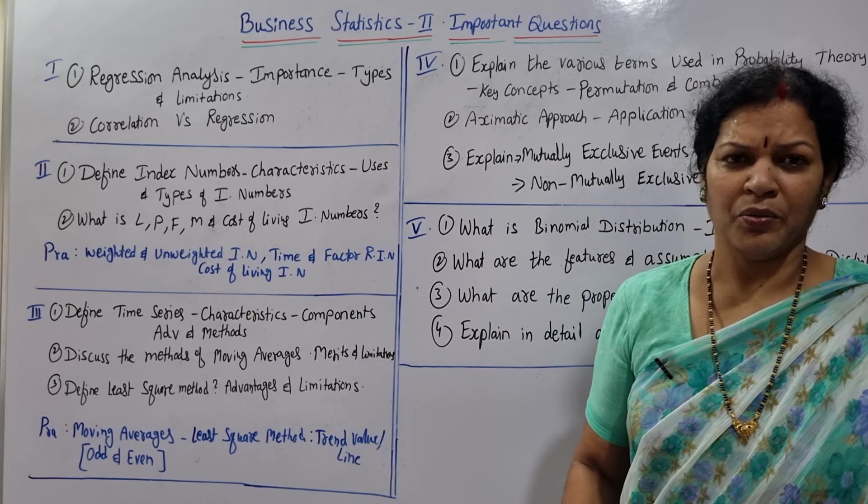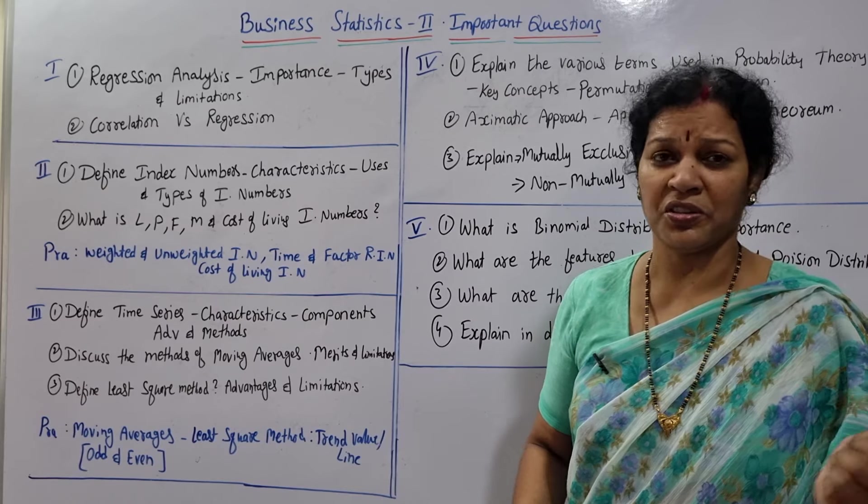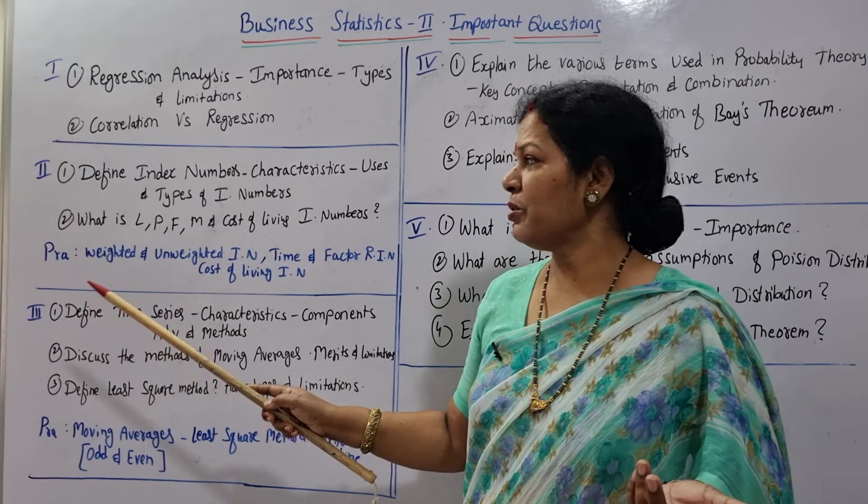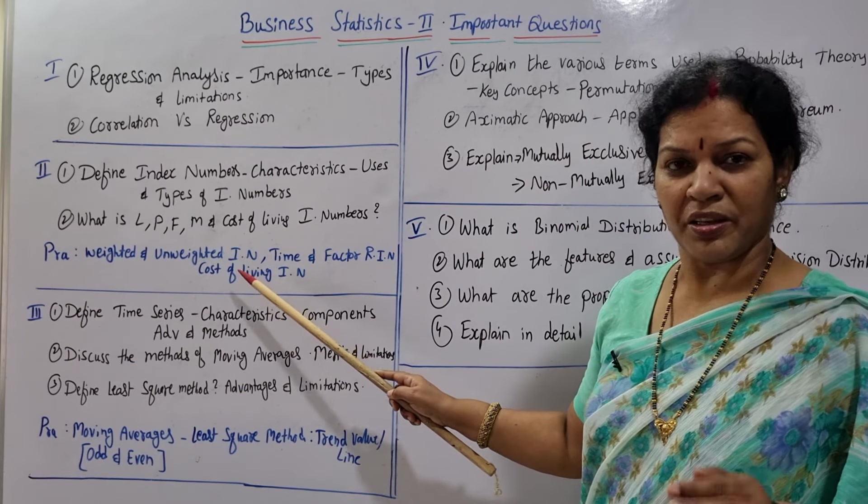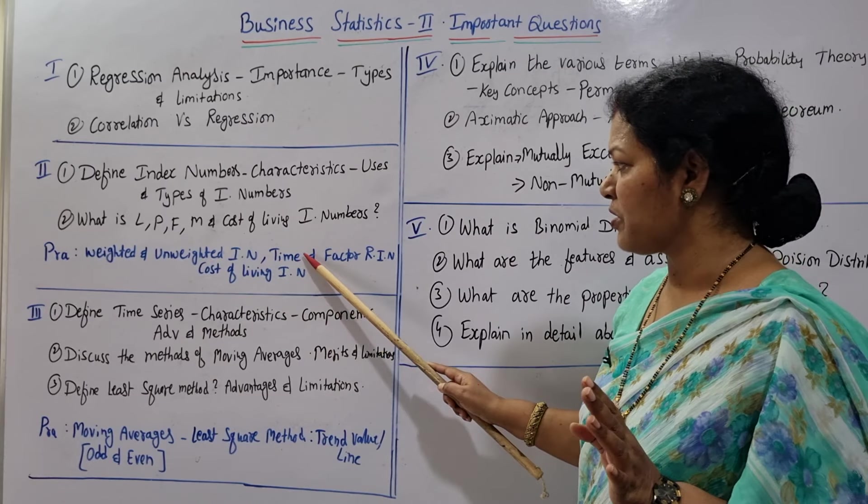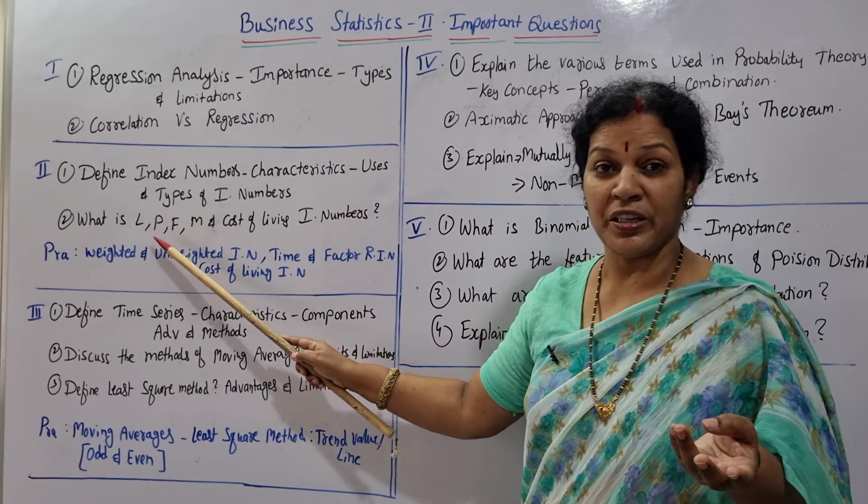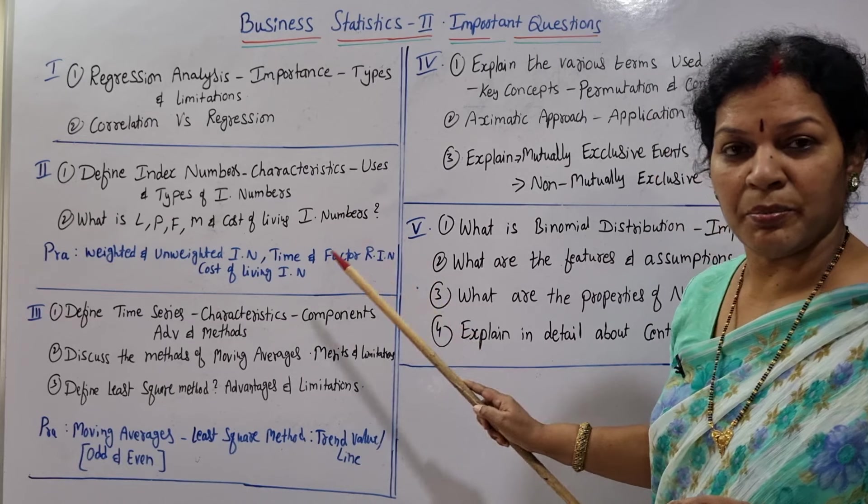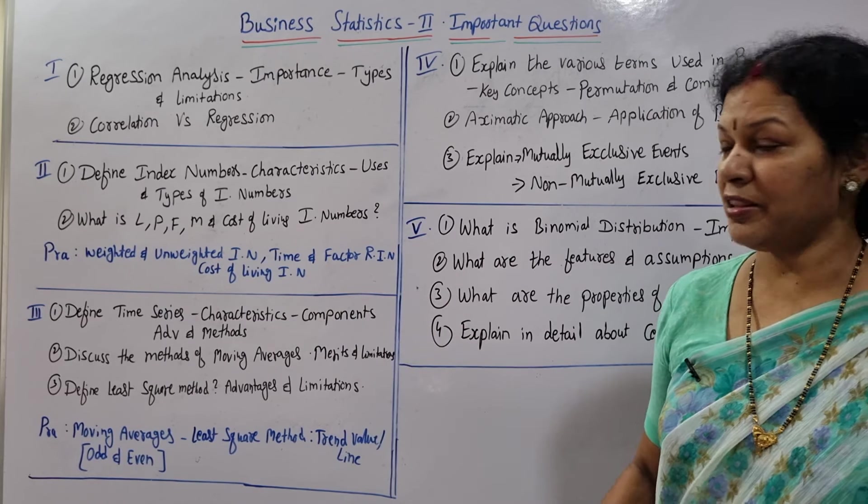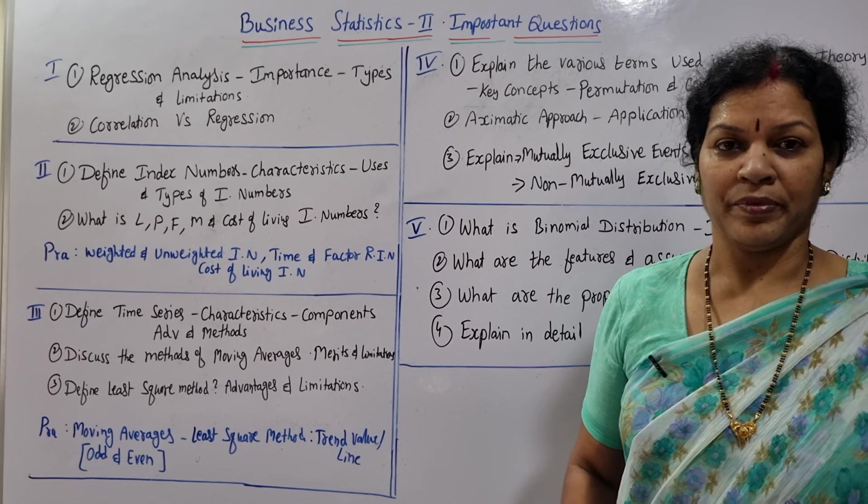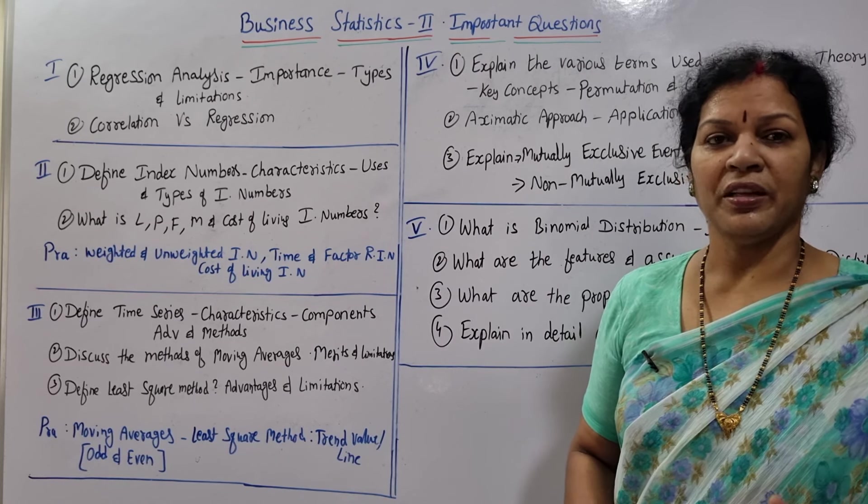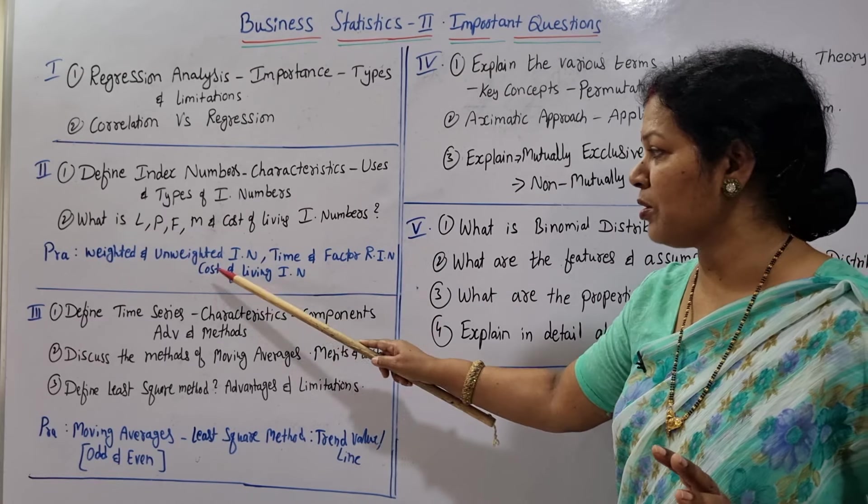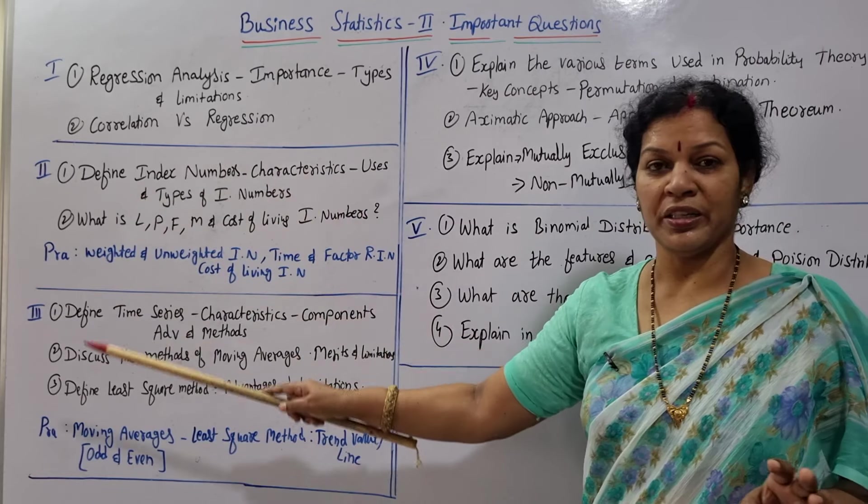In the theory, what is Laspeyre's index number, what is Paasche's index numbers, like this you can expect. Coming to the practicals - index numbers, weighted and unweighted index numbers are there, any index number you can expect, especially Laspeyre's, Paasche's, Fisher's. Apart from that, first one is time reversal index number and factor reversal index number, these two are very much important. Some data will be given to you, explain whether it is satisfying the time reversal test or factor reversal test. And also cost of living index numbers.